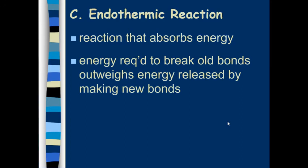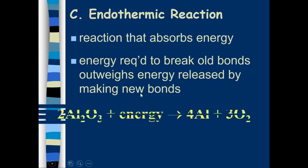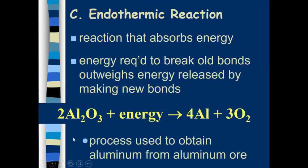But some reactions are endothermic reactions. These are reactions that absorb energy. So again, this means that the energy required to break old bonds must outweigh the energy released by making new bonds. So this is the example of obtaining aluminum from aluminum ore. You have this aluminum oxide, and when you give it energy, it can decompose into aluminum and oxygen.